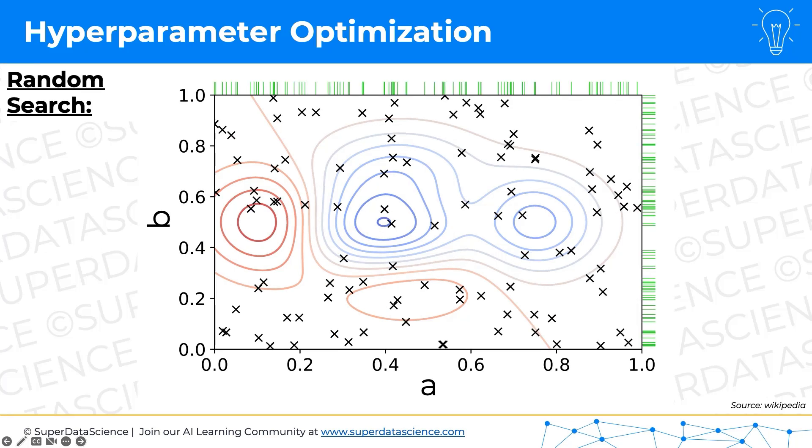Now if we take a random search and apply it to the same problem, basically, you specify what range you want A and B to be in. And then you just let the algorithm randomly choose a certain number of combinations from there and see which best result comes up with. So here you can see we got lucky and it was able to find this one and it will return that as the value of the A and B hyperparameters and the R squared for that.